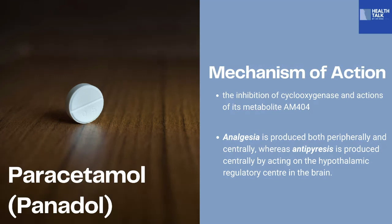In certain cases, particularly in inflammation, the concentration of peroxidase is high, which counteracts the reducing effect of paracetamol. The anti-inflammatory action of paracetamol is slight. However, the second mechanism involves the metabolite AM404, which has been detected in the brain of animals and cerebrospinal fluid of humans taking paracetamol. It is formed in the brain from another paracetamol metabolite, 4-aminophenol, by the action of fatty acid amide hydrolase. AM404 is a weak agonist of cannabinoid receptors CB1 and CB2, an inhibitor of the endocannabinoid transporter, and a potent activator of TRPV1 receptor.